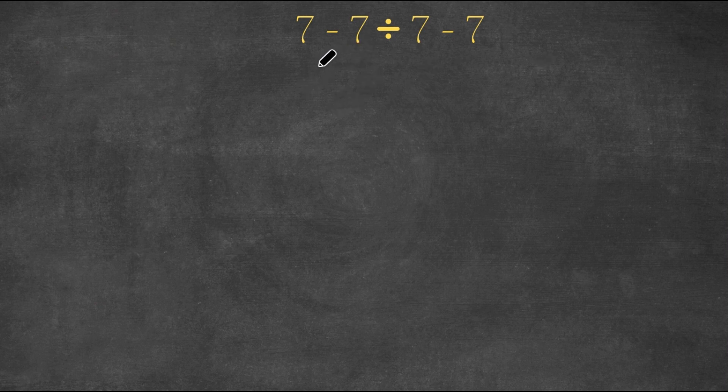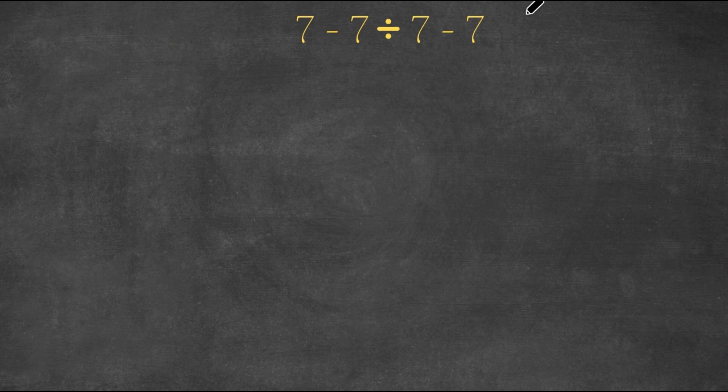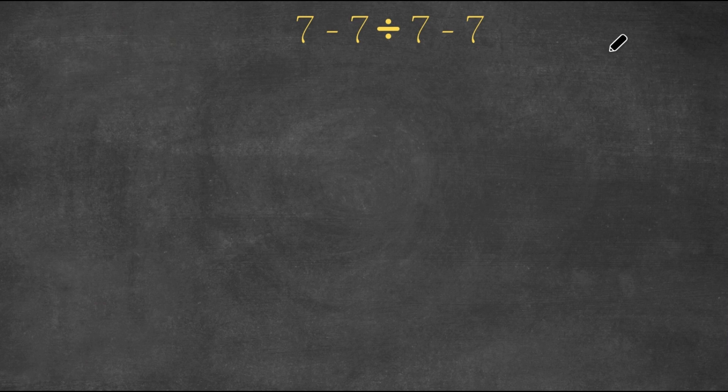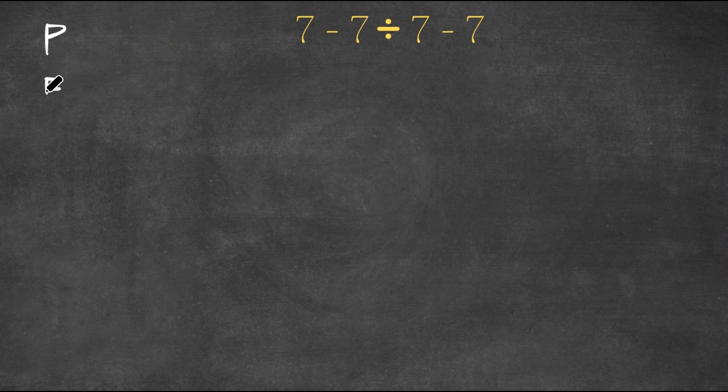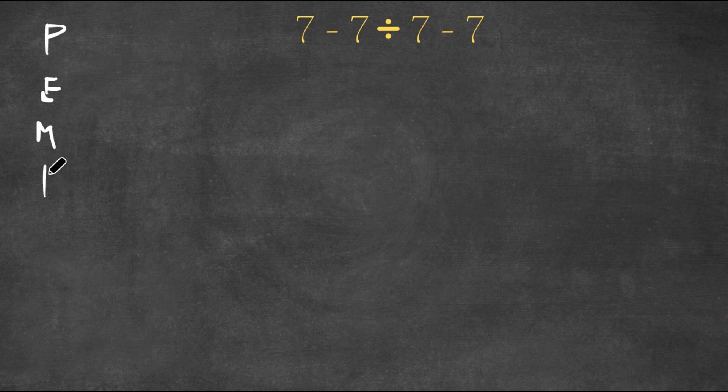So right here we have 7 minus 7 divided by 7 minus 7, and to solve this problem we need to use order of operations, also known as PEMDAS: P-E-M-D-A-S.